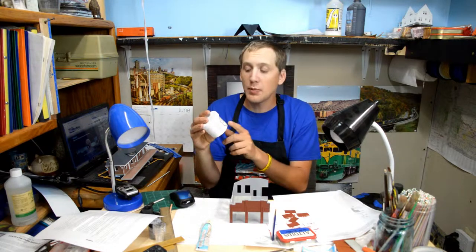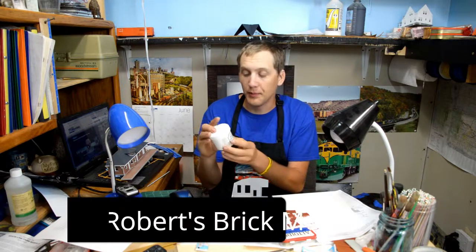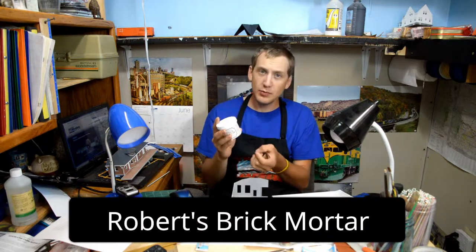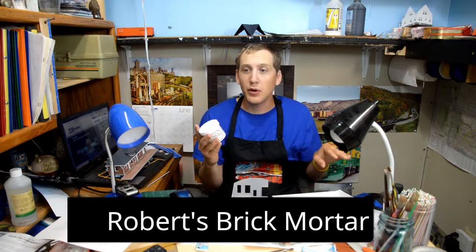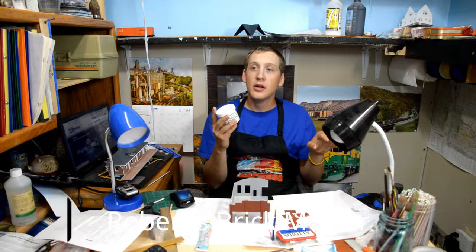It's called Robert's Brick Mortar Formula. Now, this is a white material that you brush on and you can rub the top off after it's dried and it gives you a nice, good look of brick mortar. Really nice.